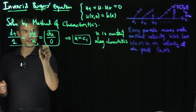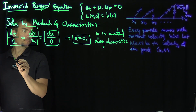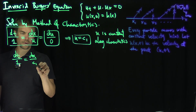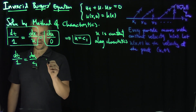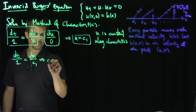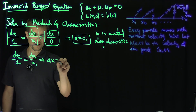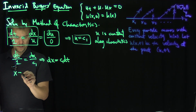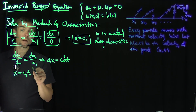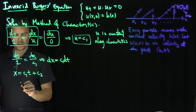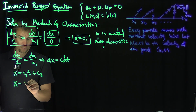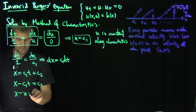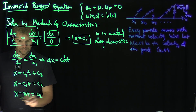Now I can fill that in: dt over 1 equals dx over c1, because u equals c1. That says dx equals c1·dt. Integrating this, we have x equals c1·t plus c2. I can write this as x minus c1·t equals c2, but c1 equals u, so this is x minus u·t equals c2.